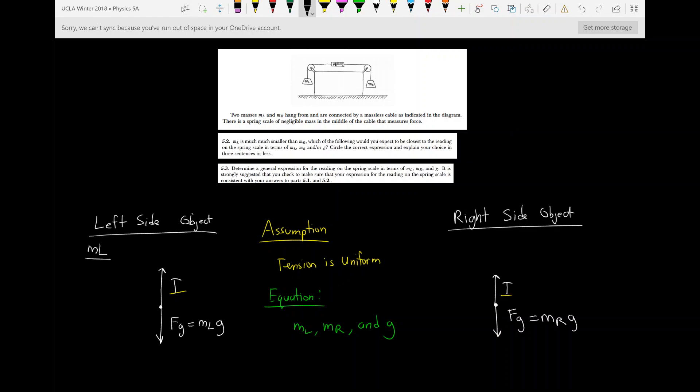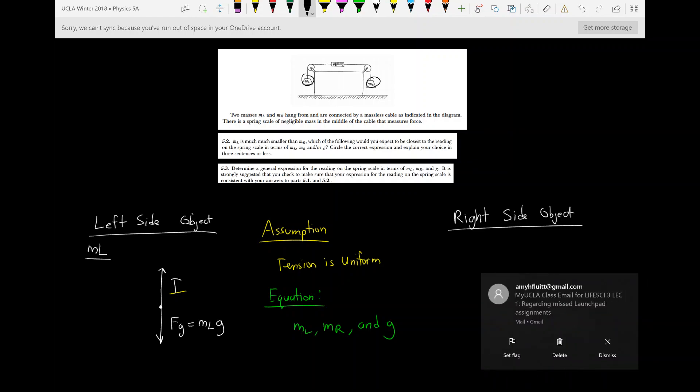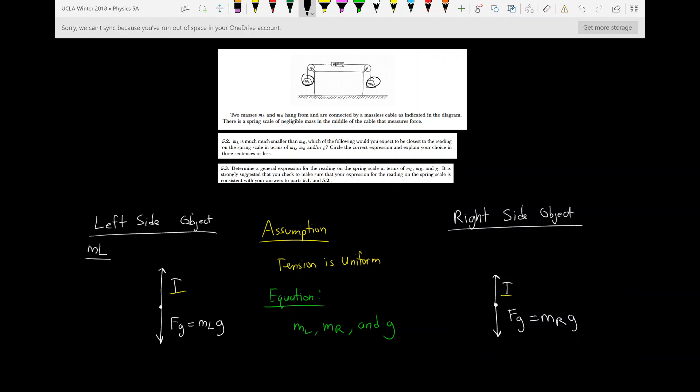So the question here is, what should this spring scale read? And a lot of students might think that it's the sum of these two, right? It's like whatever the force of MR is and whatever the force of ML is, it should like double that, or whatever. But we're going to see very soon that it's not going to be that.